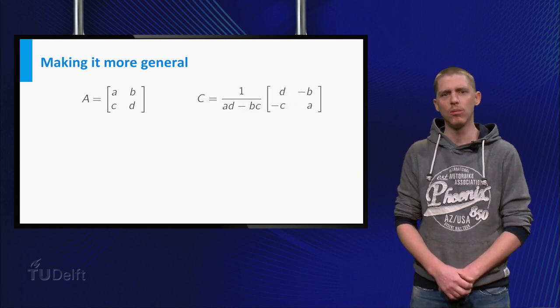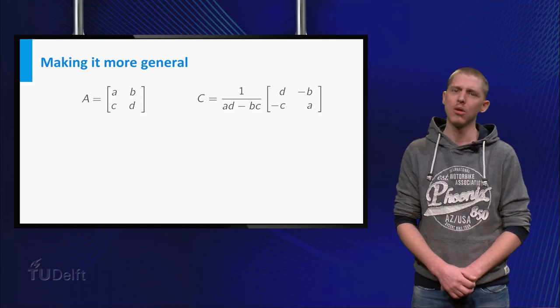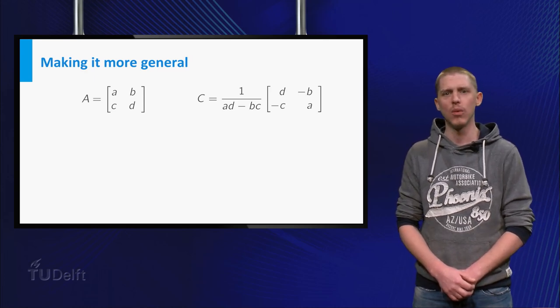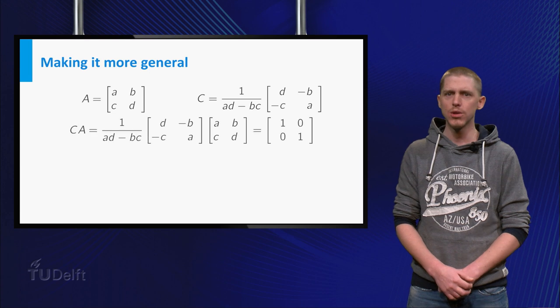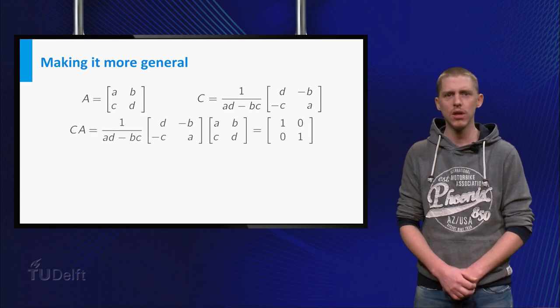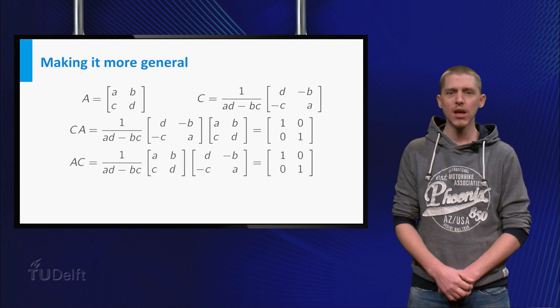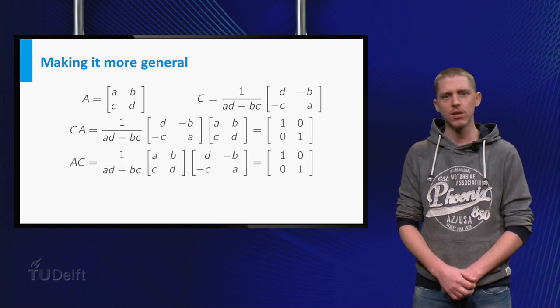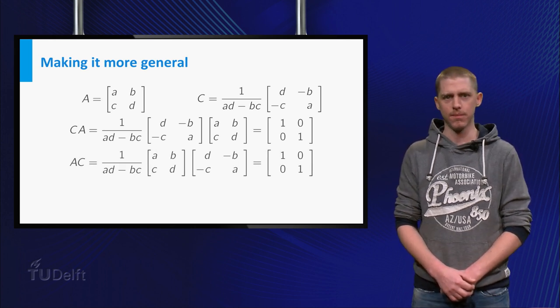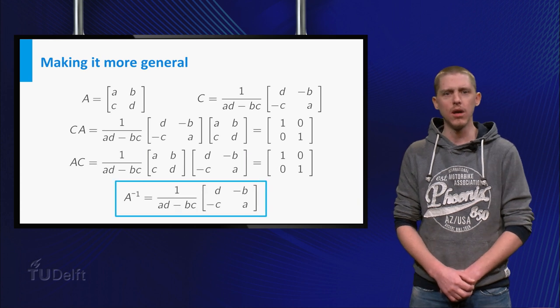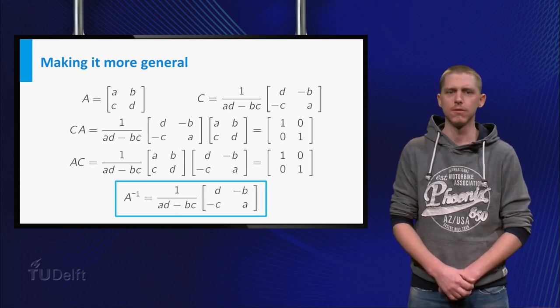You could, however, multiply C by the scalar 1 over a times d minus b times c, which will give you the identity matrix if you calculate C times A. In this case, you even get the identity matrix if you calculate A times C. Now we have found the inverse of A and so A is invertible.